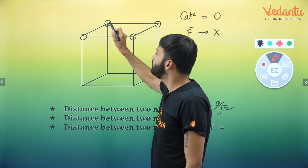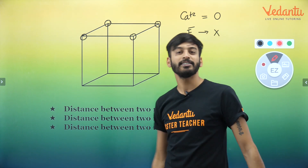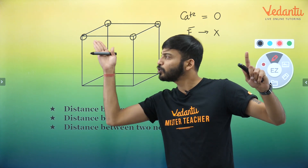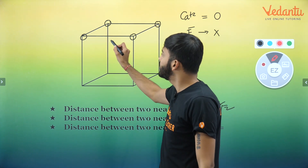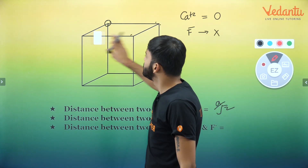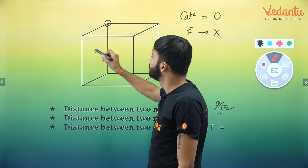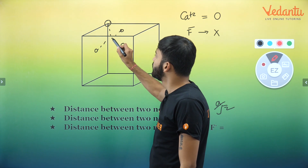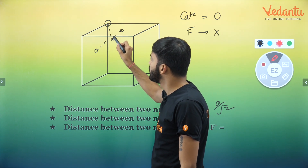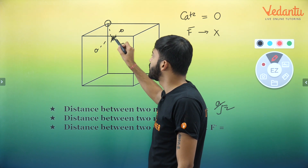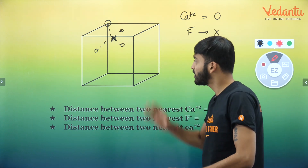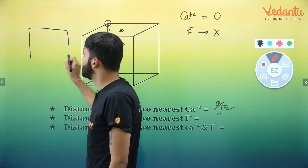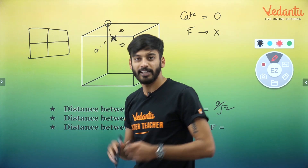Now, if we talk about how F⁻ is placed — it is present at the tetrahedral void. As I told you in the last session, tetrahedral voids are close to the corners. The representation can be understood like this. If you cut the bigger cube into 8 smaller cubes, the tetrahedral void sits at the corner of that smaller cube. I will make this structure in 2D.